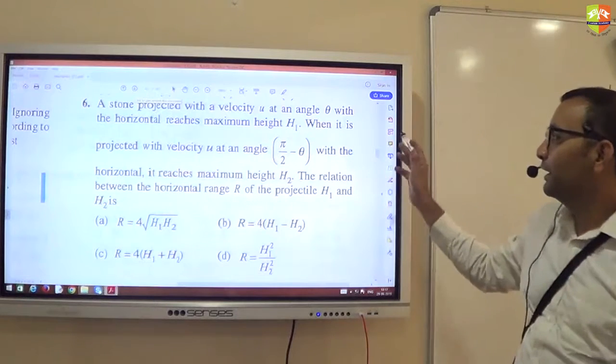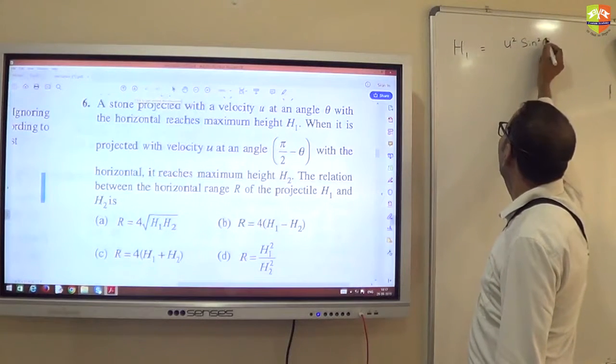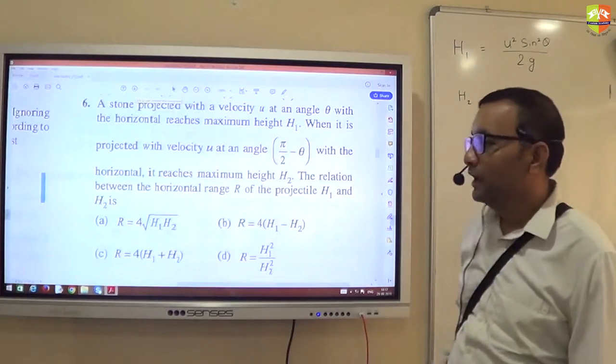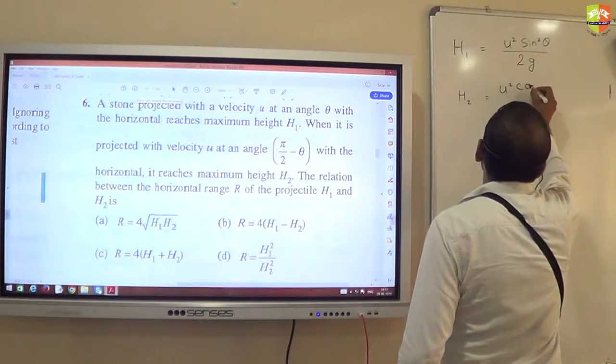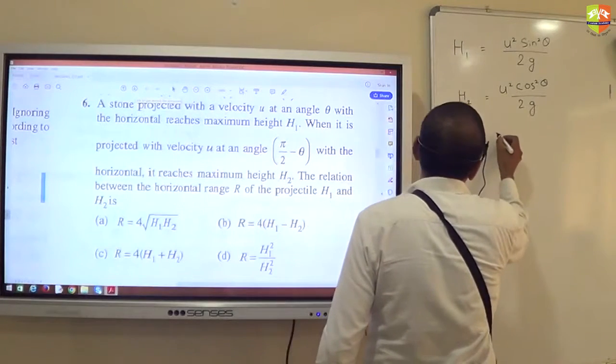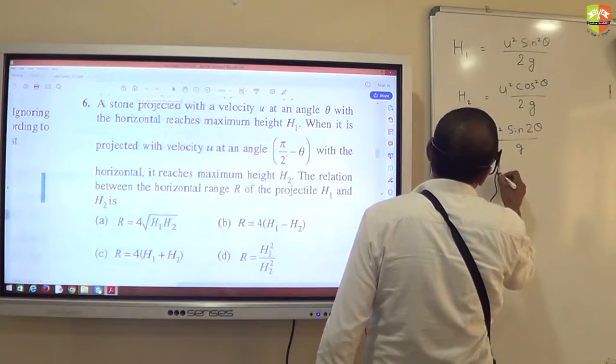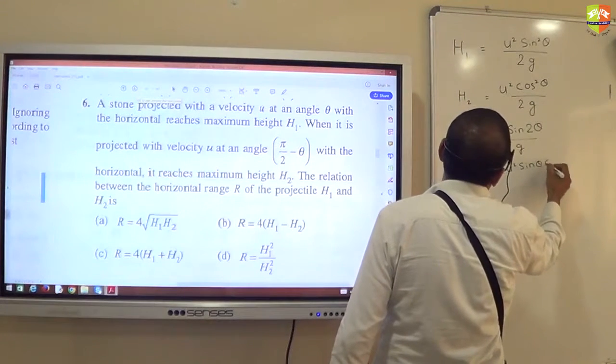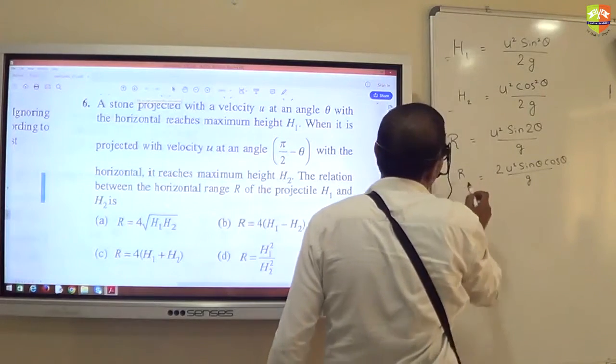All right, now I'll solve it. I can't give you so much time. See, a stone is projected with velocity u at angle θ, reaches height h1. So h1 I'll write as u²sin²θ/2g. This is h1. h2 will be what? Now this is 90 minus θ, so h2 will be u²cos²θ/2g. And R is the range. Range is u²sin2θ/g, and sin2θ is 2sinθcosθ.